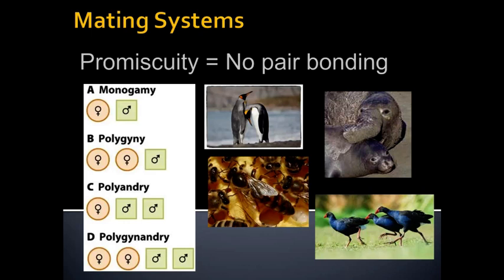The first mating system is promiscuity. In promiscuity there's no pair bonding between males and females — no relationship at all. It's just fine to mate and in most cases the male will leave, the female will often lay her eggs and leave also, and there's very little parental care of the offspring, but no connection other than the mating connection between males and females.